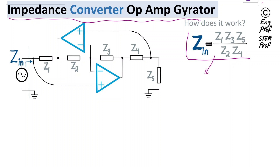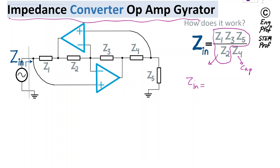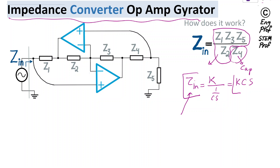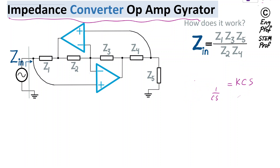This is a very interesting relationship. If we can prove it, it enables a versatile impedance converter. For instance, if we set four of these impedances to resistors and just Z4 as a capacitor, then we end up with Zin equal to some constant defined by the resistors divided by 1/Cs, which means it becomes k times Cs. So effectively, the input impedance feels as if we have virtually an inductor. With proper values of these five impedances, we can realize a capacitor-to-inductor converter, a capacitor multiplier, or even an impedance multiplier in general. There are many possibilities that can be realized by this circuit.